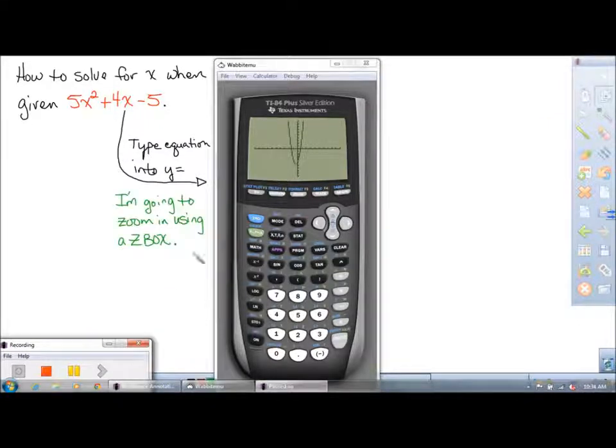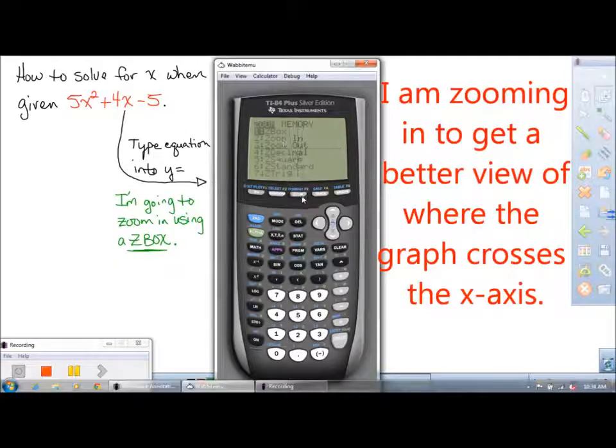We notice that when our parabola develops, we have two places where it's crossing the x-axis. I'm going to use a Z-box.